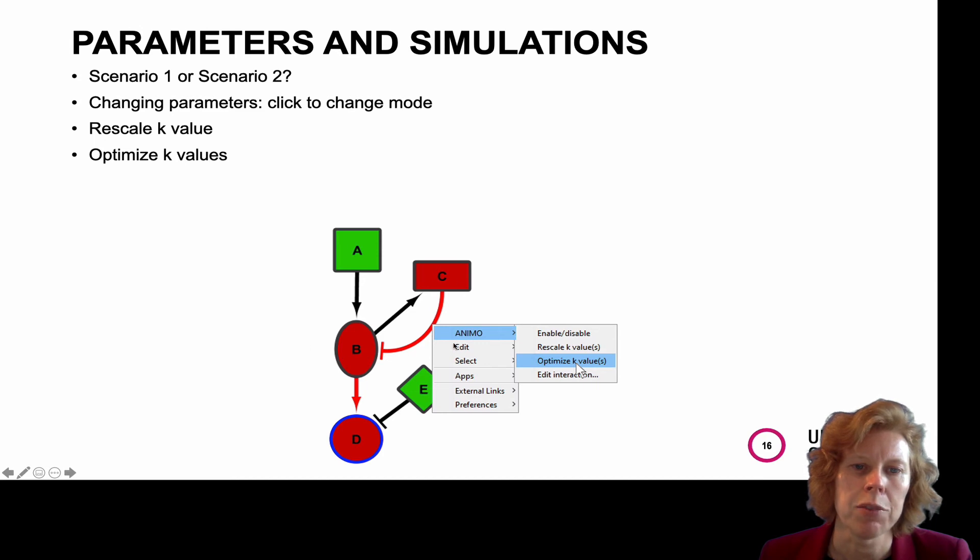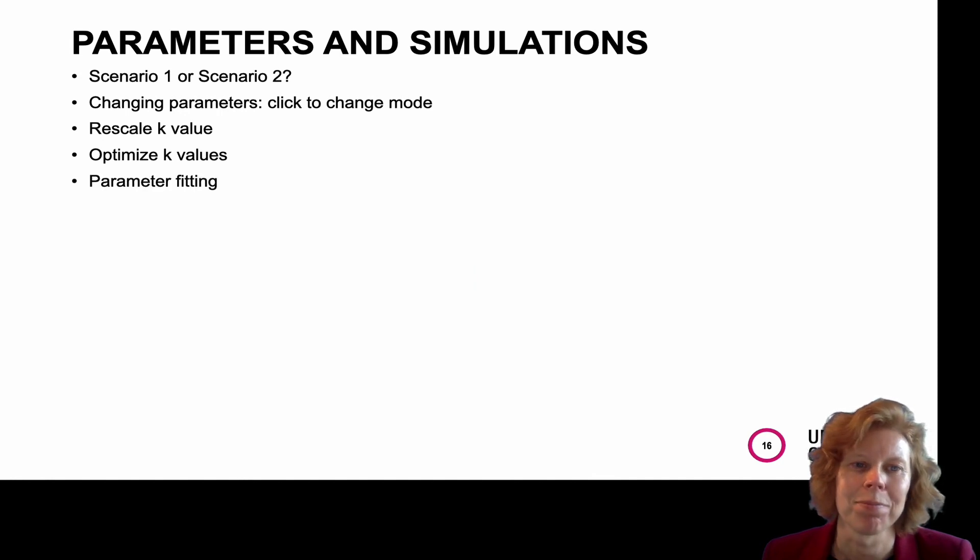Similarly, you can optimize the K values to get an obtained result from a final node. So in that case, all the interactions that have an influence on the interaction that you want to study will be optimized to give you the final optimal graph that represents your wet lab data. For this, you can also do parameter fitting. And if we need to do that, I can make a separate video of that.